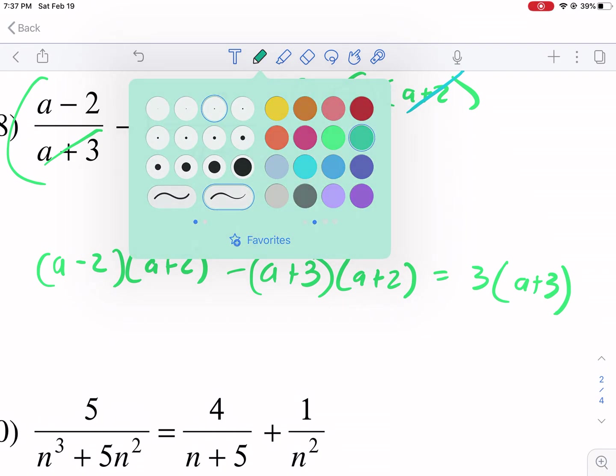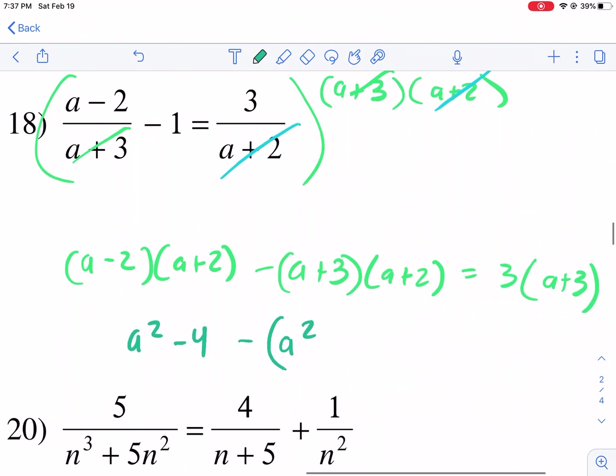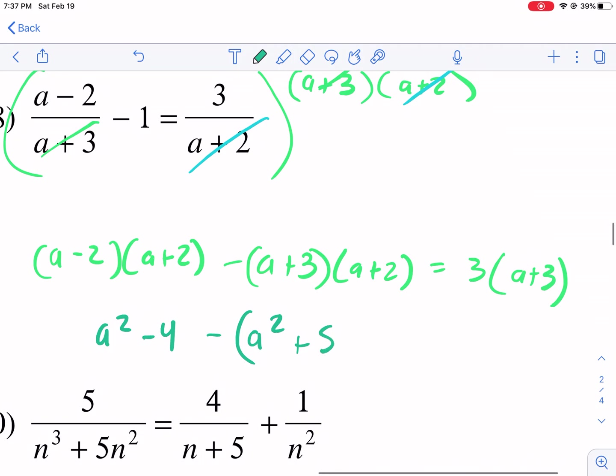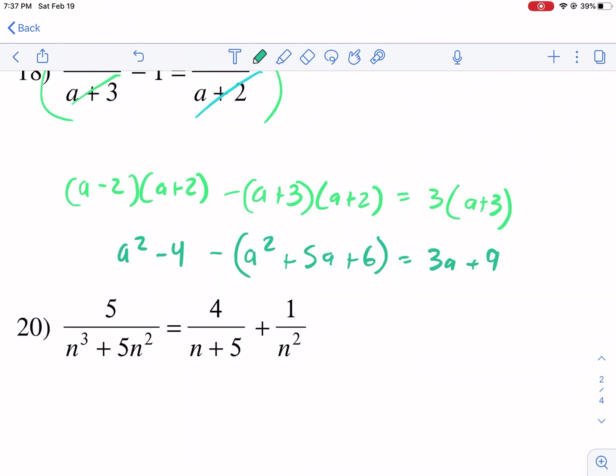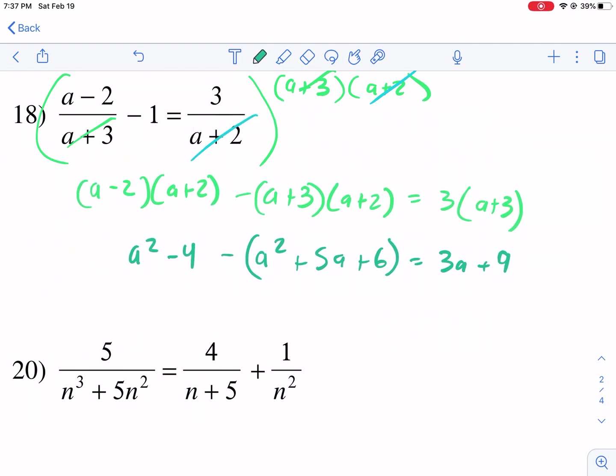Now we're going to do some distribution. We're going to have a² - 4, that's difference of squares there. Then we have minus, and I'm going to put this in parentheses because there's that minus out in front. Be careful with that. So that's a² plus 5a plus 6, and that's equal to 3a plus 9. Let me move this up. We're going to combine like terms and try to solve. I need to distribute this negative sign first. So that's minus, minus, minus. All three of those are going to be minuses because that minus was out in front.